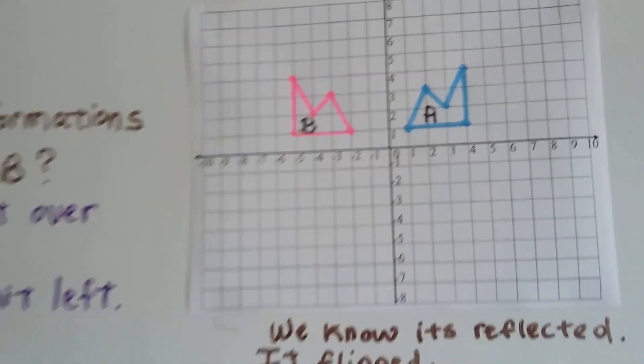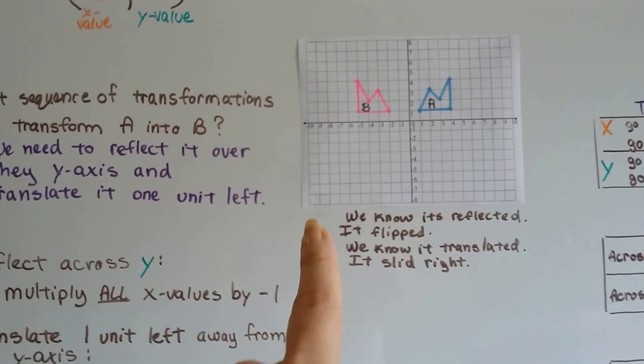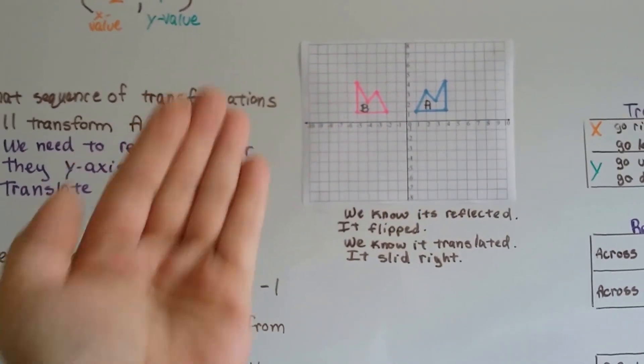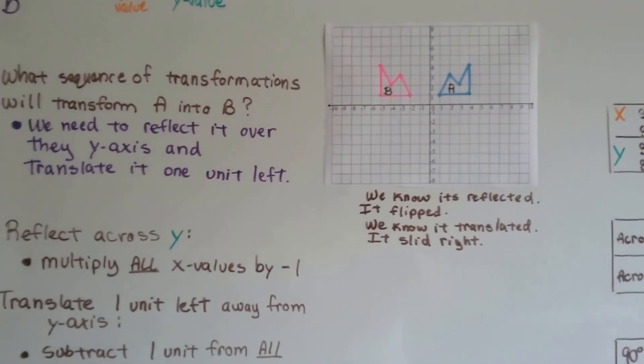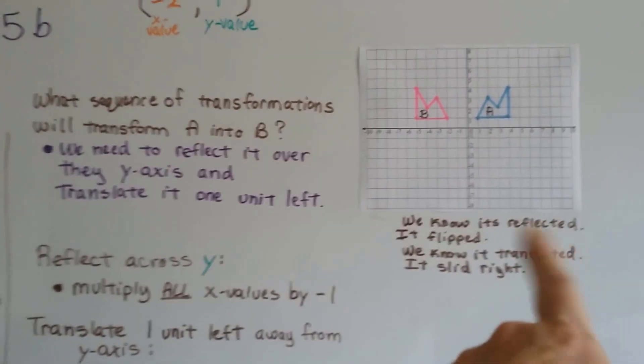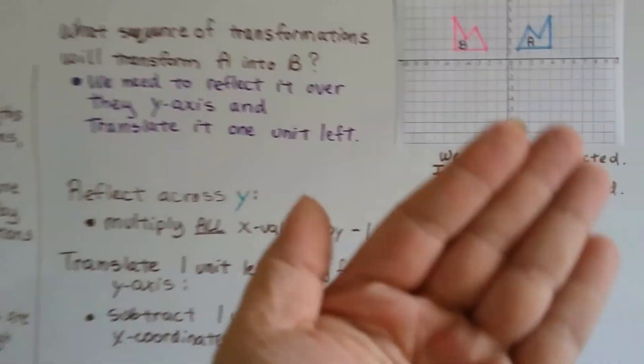So that means not only was it reflected, but it slid, it translated. So we reflect it over the y-axis, and we translate it one unit left. We can see it's reflected, it's flipped. We know it's translated, it slid to the left.